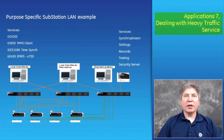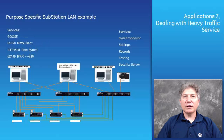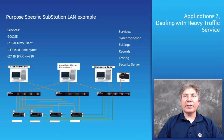Application 7: Dealing with Heavy Traffic Service. Traditional substation LAN architecture deals with heavy traffic services. Some new services have high bandwidth requirements such as GOOSE, IEC 61850 MMS, Synchrophasors, Event Records, Data Logger, Oscillography, Security Server, IEEE 1588 Time Synchronization, Parallel Redundancy Protocol, etc. In version 7, the new CPU is designed to segregate heavy traffic services from mission critical services to prevent latency using three different independent ports.